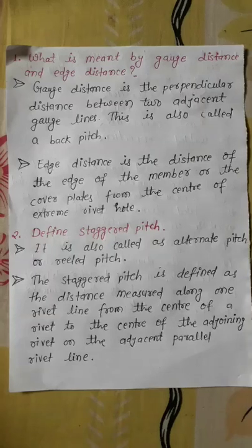What is meant by gauge distance and edge distance? Gauge distance is the perpendicular distance between two adjacent gauge lines. This is also called a back pitch. Edge distance is the distance of the edge of the member or the cover plate from the center of the extreme rivet hole.